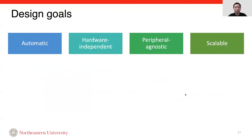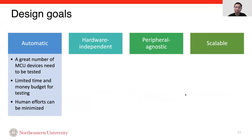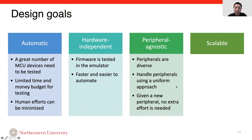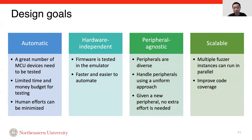To overcome the limitations of previous work, we set four design goals. The first goal is to make it automatic. Compared to desktop programs, there are a larger number of MCU devices that need to be tested, but firmware developers have less time and money for testing. The next goal is hardware-independent, meaning firmware is tested in the emulator and no real hardware is needed. The third goal is peripheral agnostic — peripherals are diverse, so an effective approach handles them in a uniform way with no extra effort for new peripherals. Last, a scalable solution can improve code coverage by running multiple fuzzer instances in parallel.